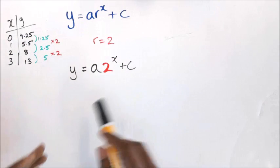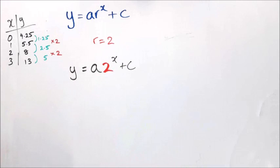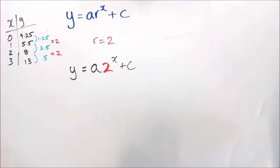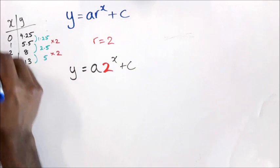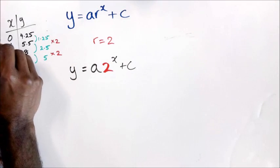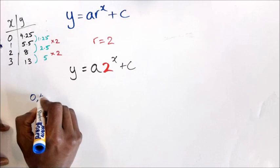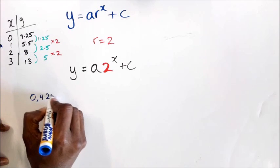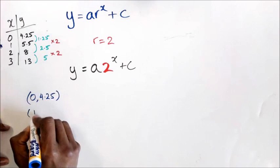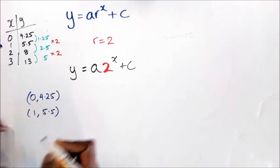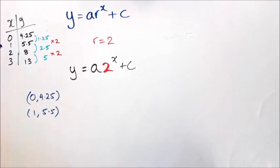Once you have this equation set up, the next part is trying to figure out what your a value and c value are. The way to do this is to use simultaneous equations. I'm going to use the points (0, 4.25) and (1, 5.5) to create a set of simultaneous equations.